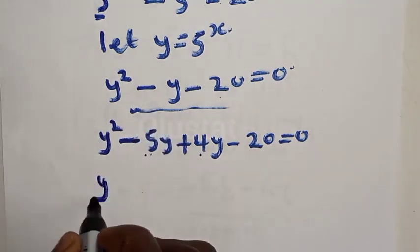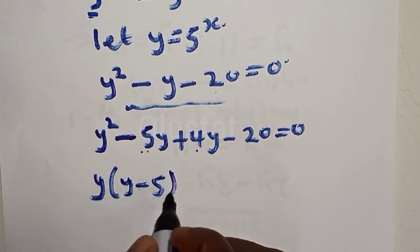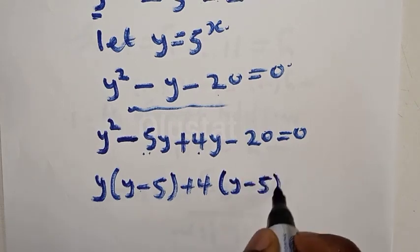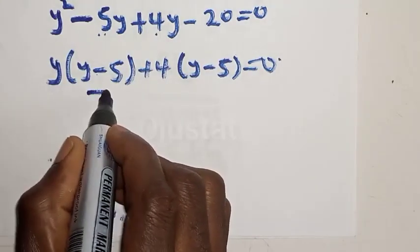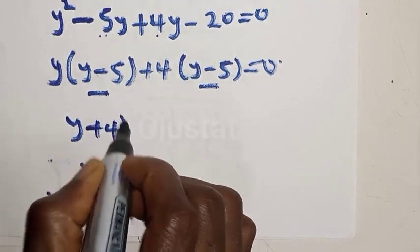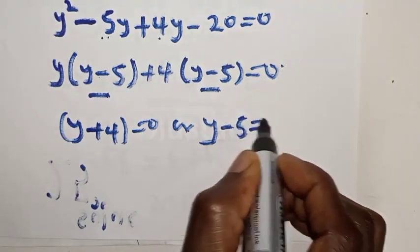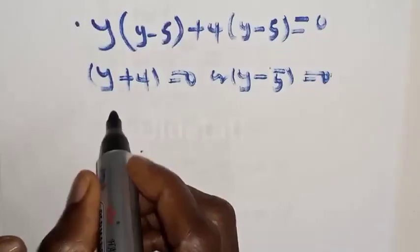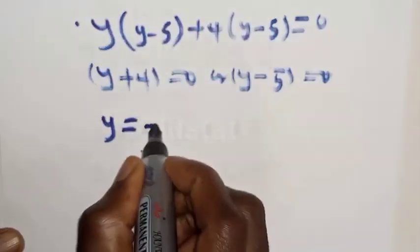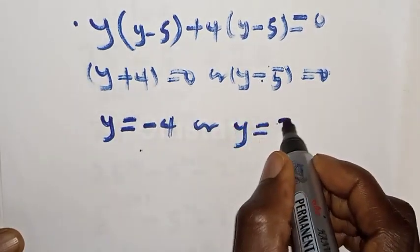Then this can be expressed as y into y minus 5, and we have the common value y minus 5, giving y plus 4 is equal to 0. Therefore, y plus 4 is equal to 0 or y minus 5 is equal to 0. Then y will be equal to minus 4, or y is equal to 5.